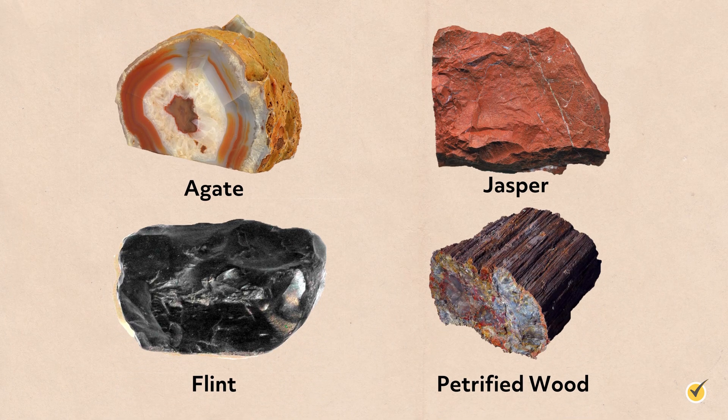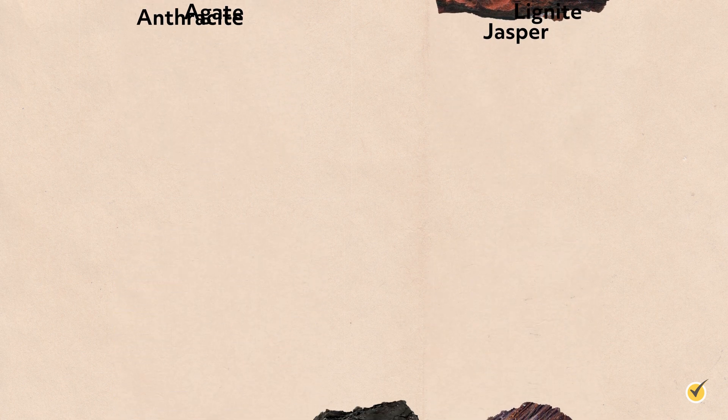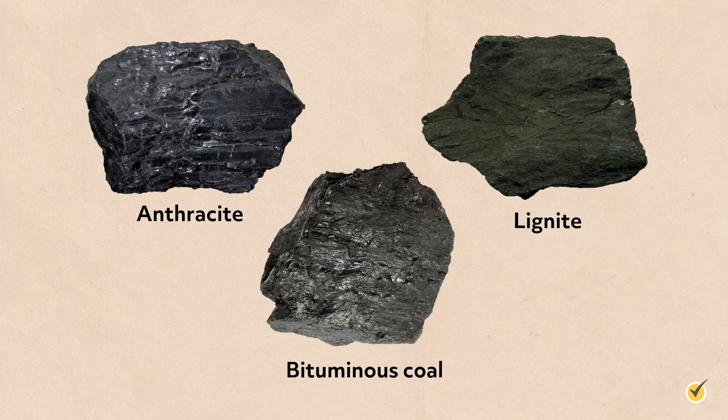The last type of sedimentary rock is organic. These sedimentary rocks form from the carbon-rich remains of organisms. Coal is an example of this type of rock, as it is formed when dead plant matter decays and is converted into coal by the heat and pressure of deep burial. Sometimes you can even see plant structures like leaves or bark in coal.